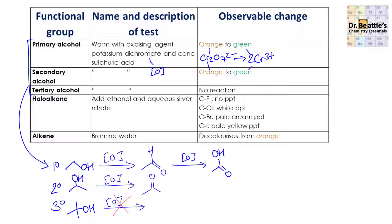As a side note, obviously if we reflux this and provide enough oxidant, we can take the primary alcohol all the way to the carboxylic acid.